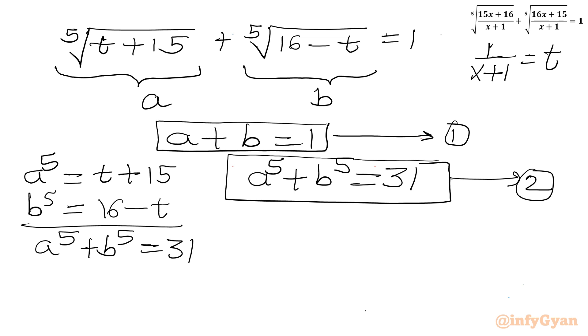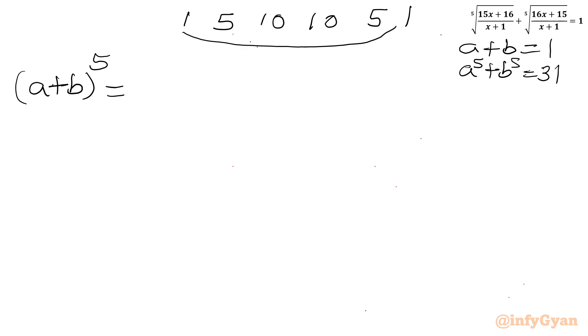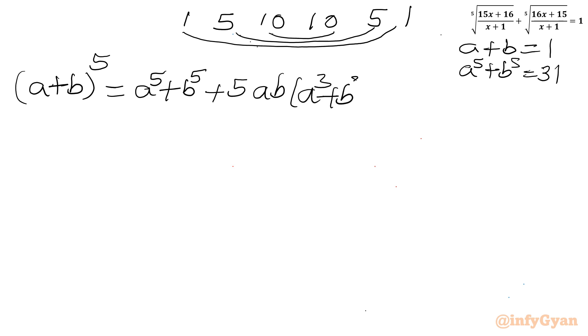Now I will use the binomial expansion of (a + b)⁵. The coefficients are 1, 5, 10, 10, 5, 1. Grouping paired terms, we get: (a + b)⁵ = a⁵ + b⁵ + 5ab(a³ + b³) + 10a²b²(a + b).